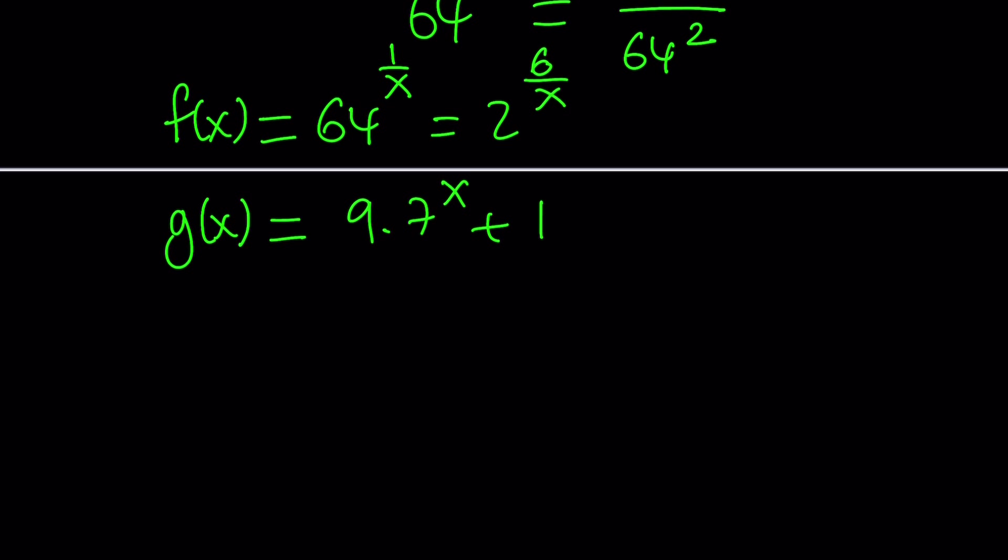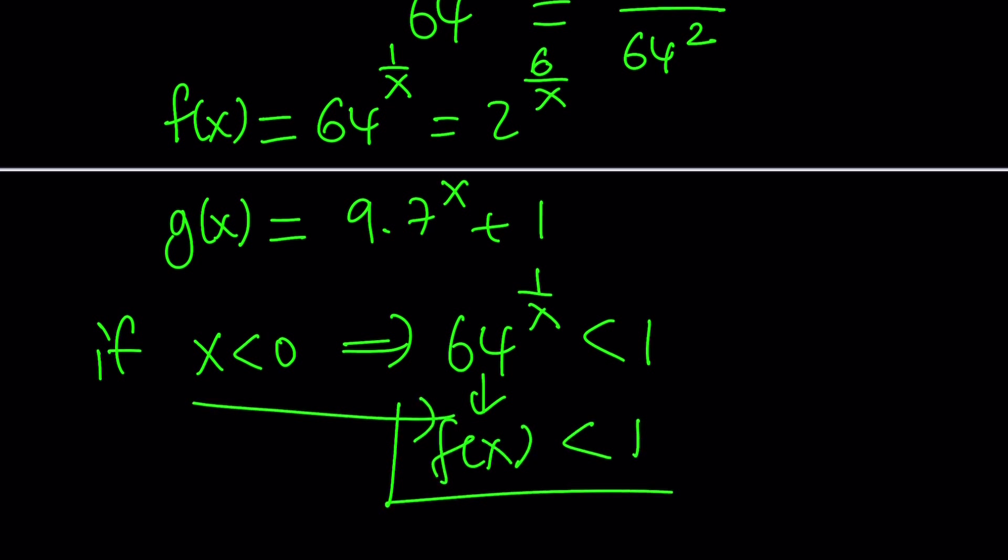Now, we're going to look at the following. If x is less than 0, then 64 to the power of 1 over x is going to be less than 1. And this is equal to f of x. So, f of x is going to be less than 1 if x is negative.